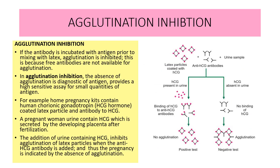Now the fourth type is agglutination inhibition — a very important technique to determine the presence of antibodies or antigen in the serum. In agglutination inhibition, if the antibody is incubated with the antigen prior to mixing with the latex, agglutination is inhibited because the antibodies and antigens — both epitopes and paratopes — are fixed and not free. As a result, no agglutination occurs because no free antibodies are available.